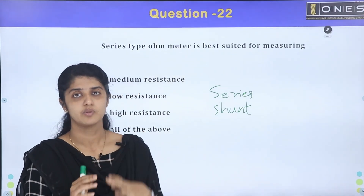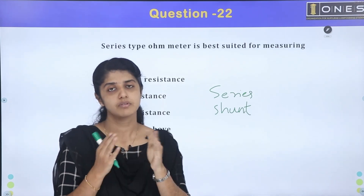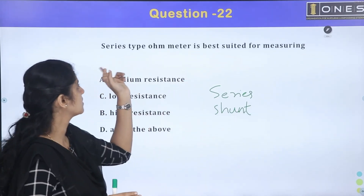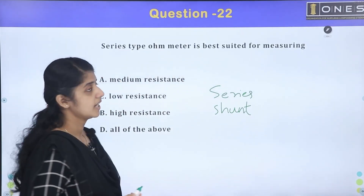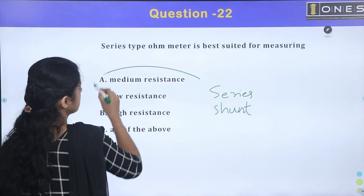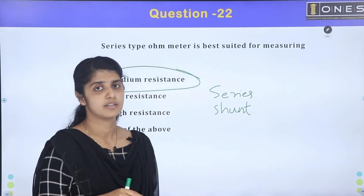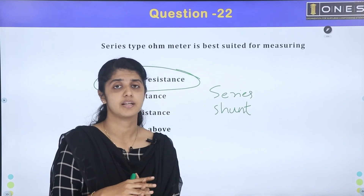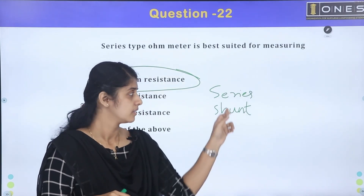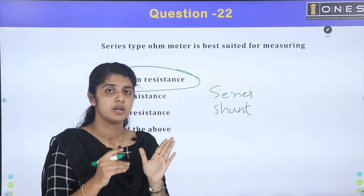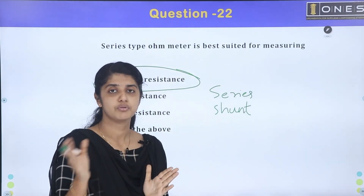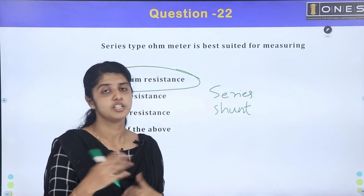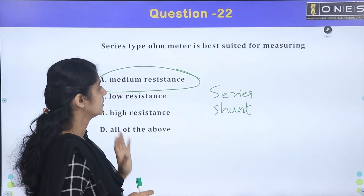There are two ohmmeter types used with PMMC meters. The series-type ohmmeter is suitable for measuring medium resistance. The scale of a series ohmmeter goes from 0 to infinity, while the shunt ohmmeter goes from infinity to 0.